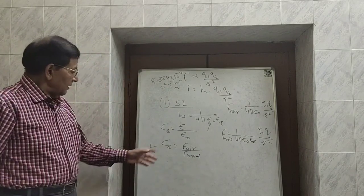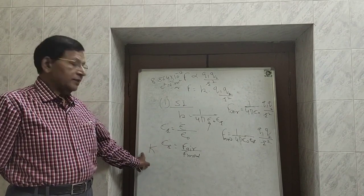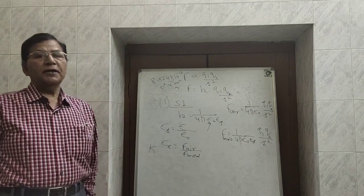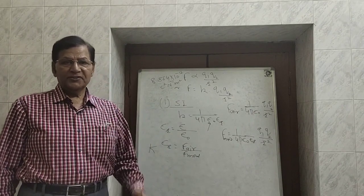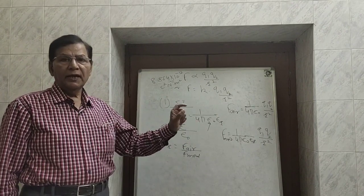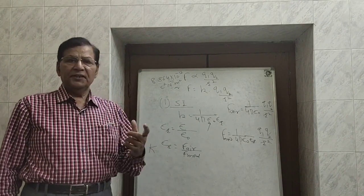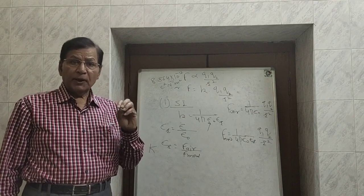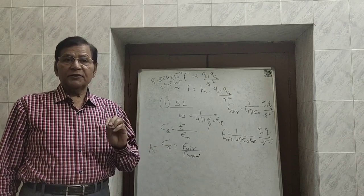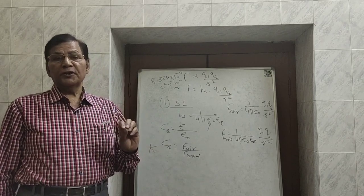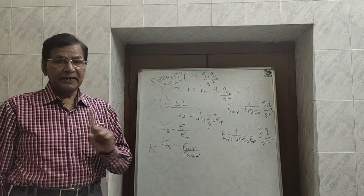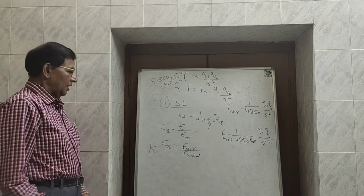Epsilon-r and capital K are the same, and their values are different for different materials. For air, strictly speaking, its value is 1, and for water its value is 80. The value of epsilon-r is quite large for water because of the polar nature of water molecules, and this large value of epsilon-r for water makes it a universal solvent.